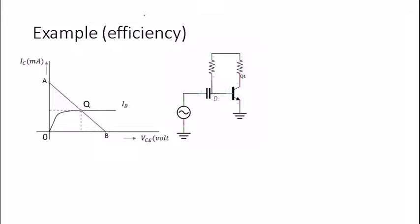Now I'll discuss the efficiency of a Class A power amplifier and why it is ideally 25%. Before getting into why, we need to understand this graph which represents the output characteristics of a transistor. What we have here is our Q-point — ideally we want the BJT to operate at this Q-point for amplification.